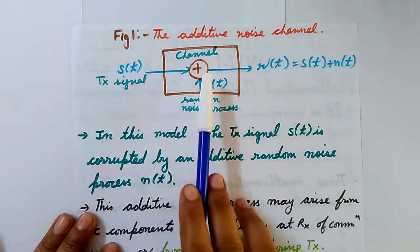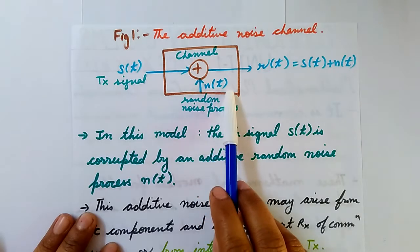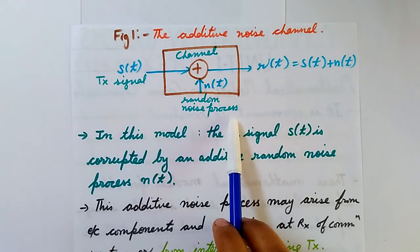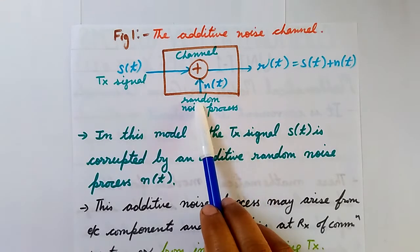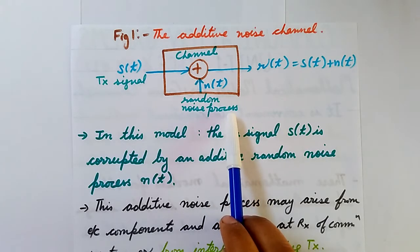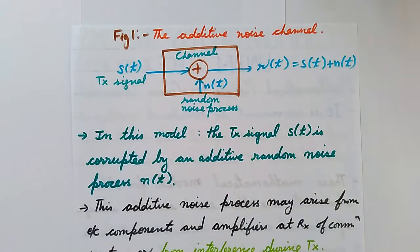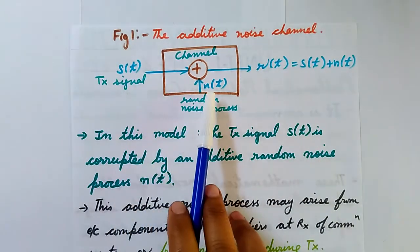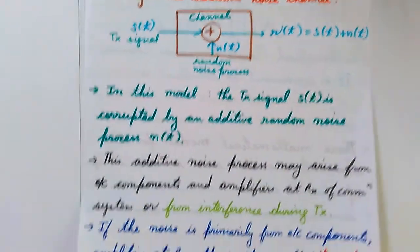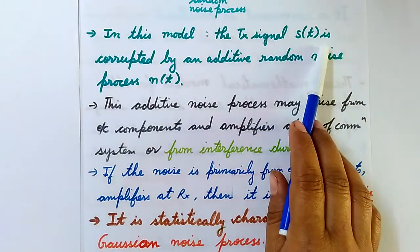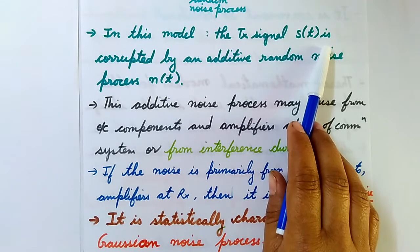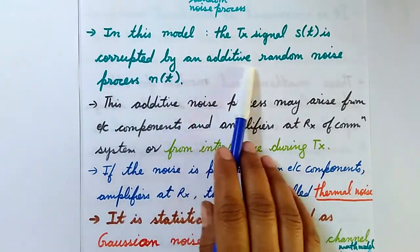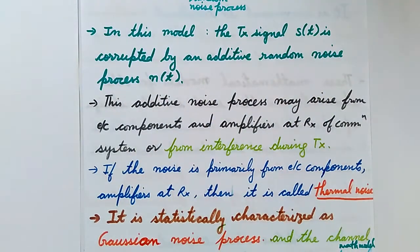The transmitted signal S(t), the channel, and N(t) is a random noise process — we call it a random noise process because you cannot determine beforehand what kind of noise will occur. At the receiver end we receive signal R(t), which is the sum of the transmitted signal along with the noise N(t). In this model, the transmitted signal S(t) is corrupted by an additive random noise process N(t).